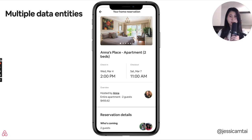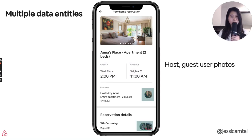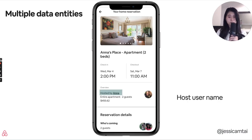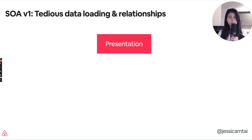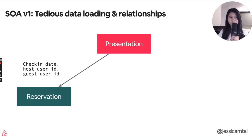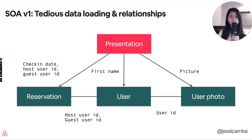Let's walk through an example of how a particular product — such as looking at your home reservation — may look in SOA v1. In the reservation page, you might want to know your check-in date. There would also be information about the guest and host user photos, and also the host username. Putting this into SOA v1 resulted in a lot of tedious data loading and relationships between these entities. The presentation service would call to the reservation service to get the check-in date, and would also need to fetch the host user ID and guest user ID, then go fetch from the user and user photo services in parallel. The relationships between these entities — reservation to user, or user to user photo — created a graph-like structure.